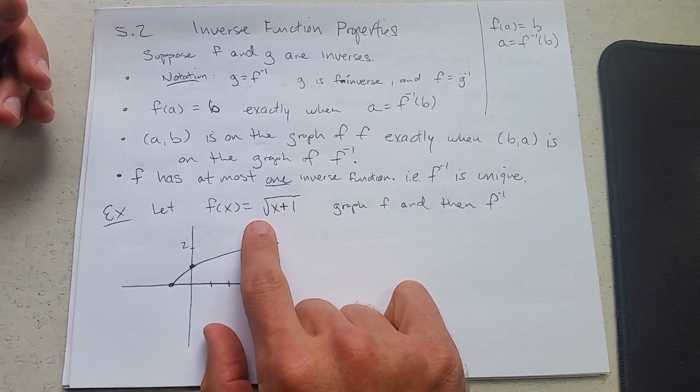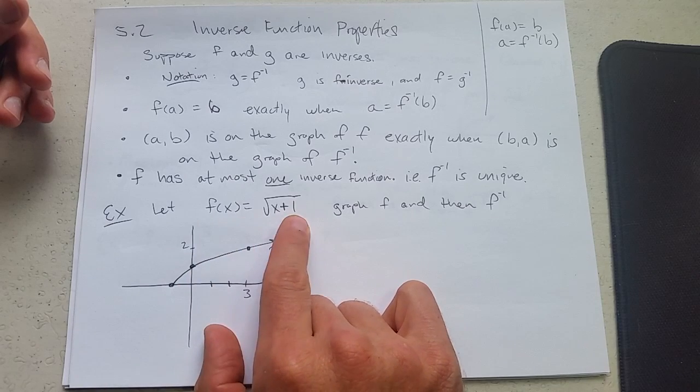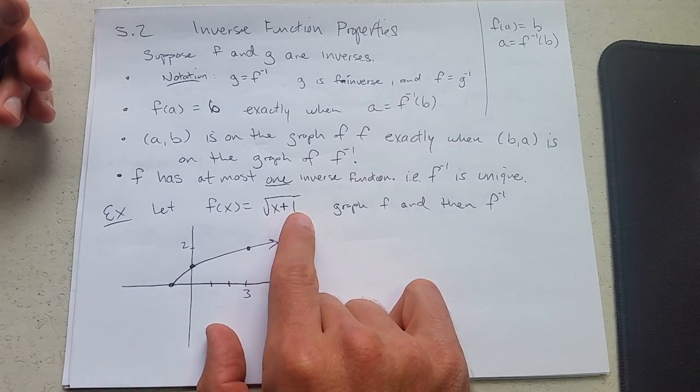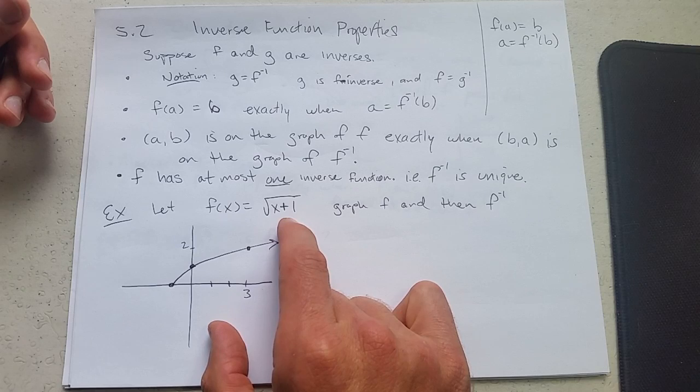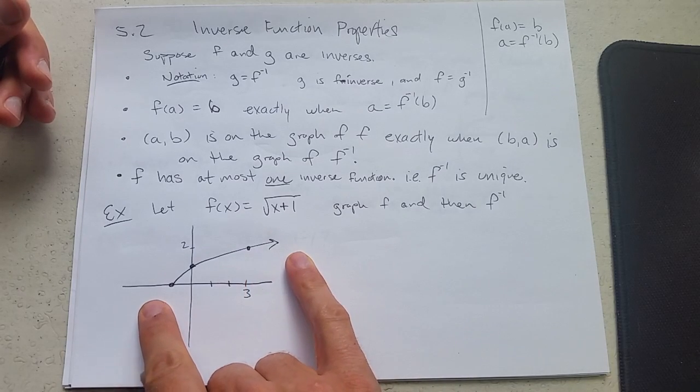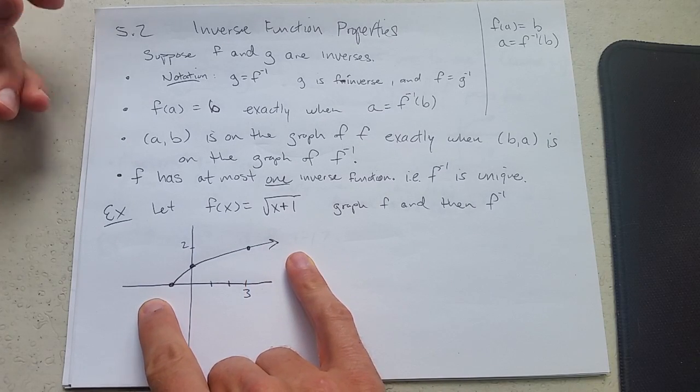Now we're going to look at a graph. I already started out graphing square root x plus one. It's a square root function. This shift is a shift left one. So here's the graph of square root x plus one.